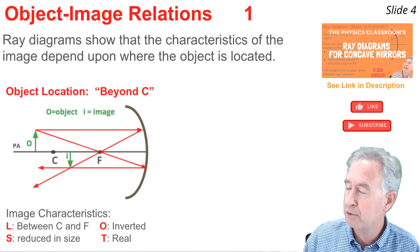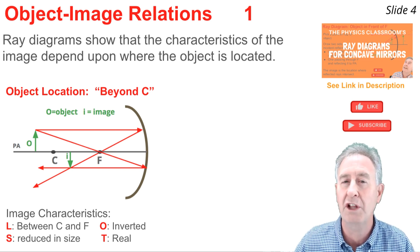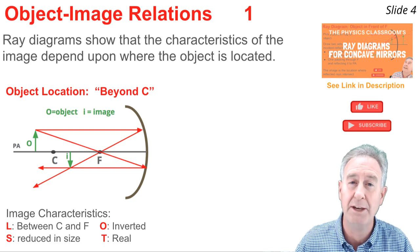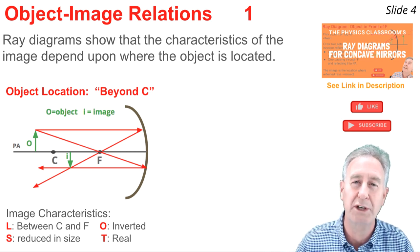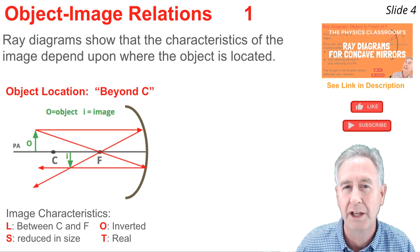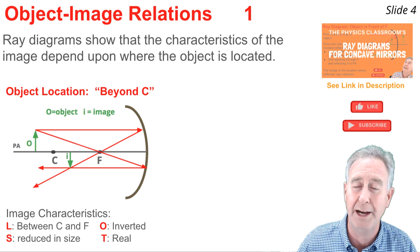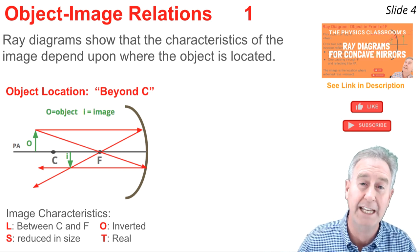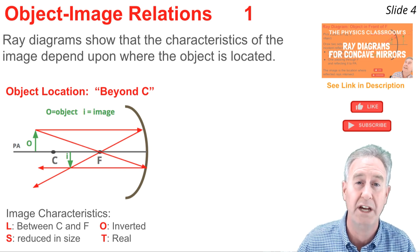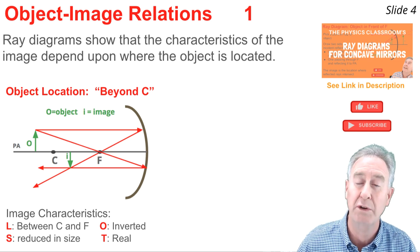In the first situation, the object is located beyond the center of curvature. Using the LOST model, the location of the image — marked I in the diagram — is between the center of curvature and the focal point. The orientation is inverted, since the image is upside down while the object is right-side up. The size of the image is reduced, meaning it's smaller than the object. And the type is real, because the reflected rays are converging at the image location.